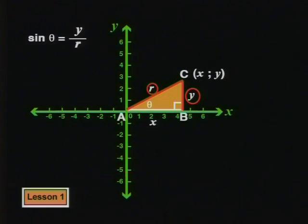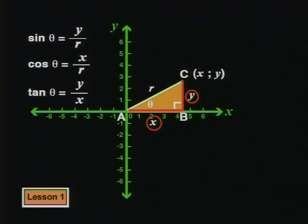So, in this triangle, sine theta is y divided by r, cos theta is x divided by r, and tan theta is y divided by x. You've seen this before.